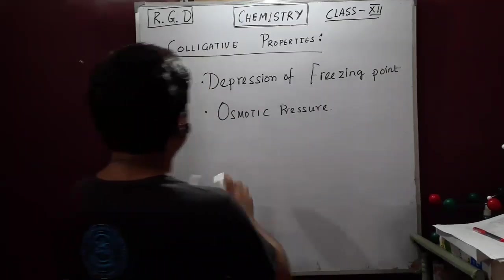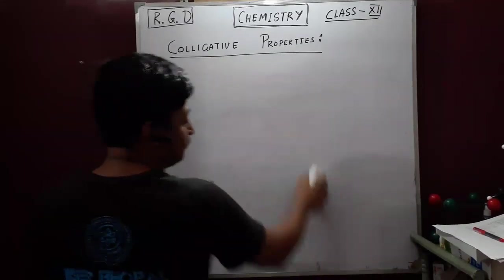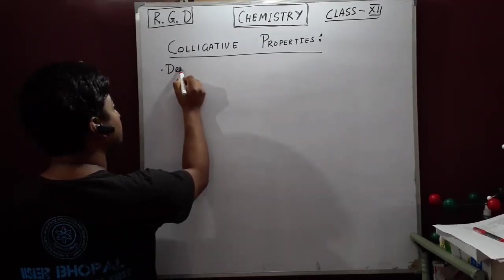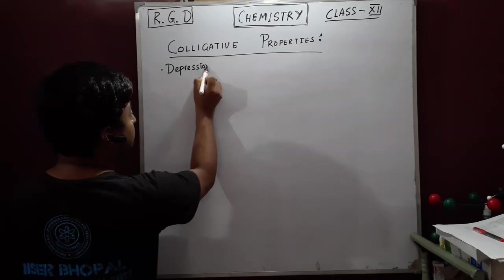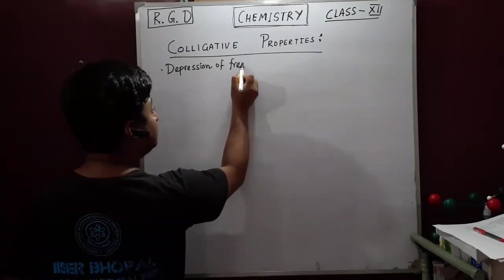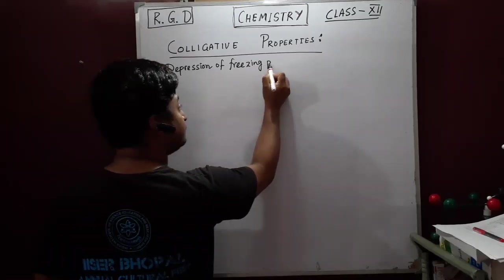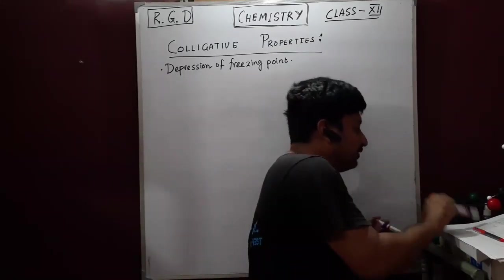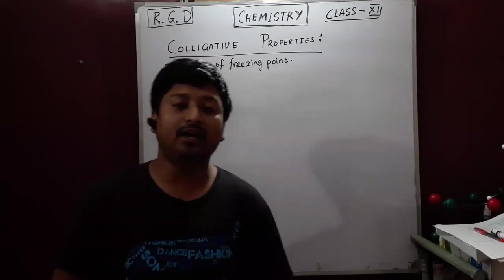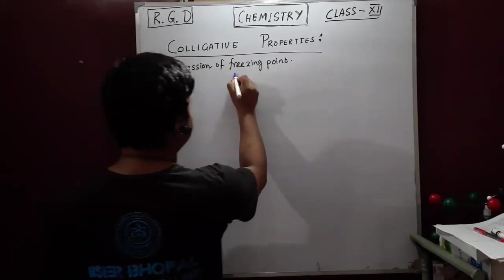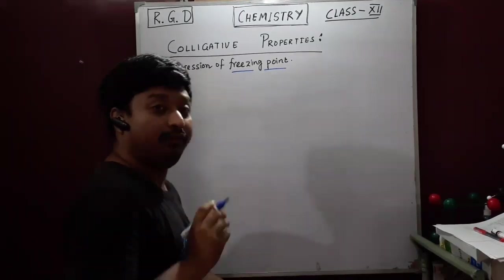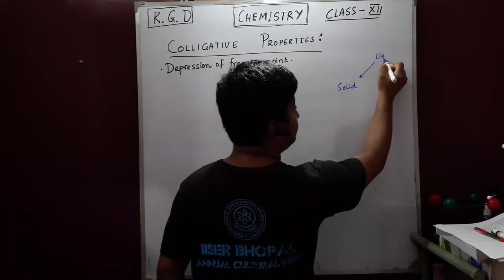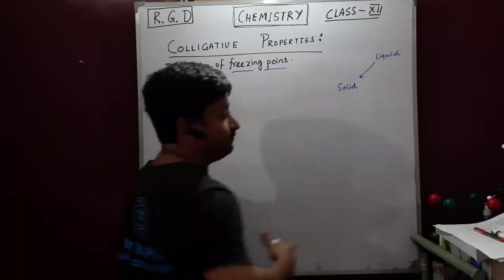Moving on to the first one — depression of freezing point. What does this mean? It is a particular property which actually decreases the freezing point. The freezing point is basically when you convert a liquid to solid — it freezes. The freezing point is nothing but the melting point.